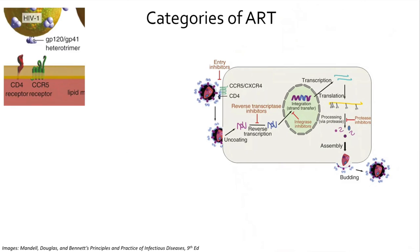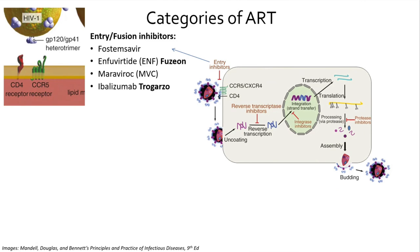Starting with some of the virology behind the different drug categories: the entry inhibitors are the first class, where GP120 and GP41 subunits combine and interact with the CD4 and CCR5 receptors on the host's CD4 T cells. These medications are less clinically significant for most patients, but important in resistant infections.